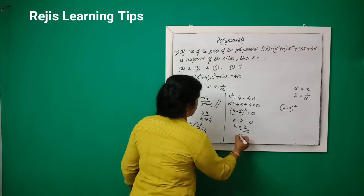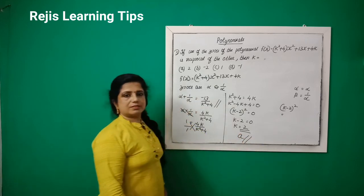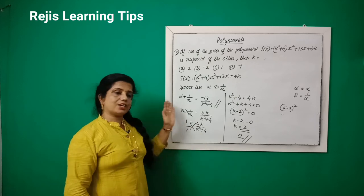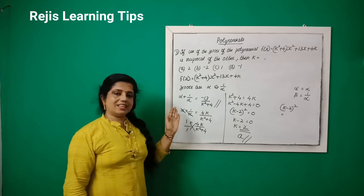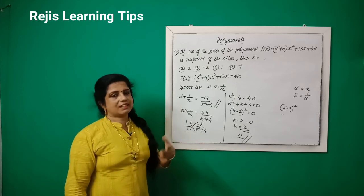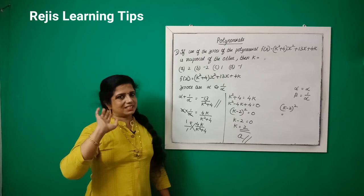So answer A, k = 2, is the correct answer. Please study these three questions clearly. The remaining questions we will see in the next class. Until then, bye-bye.